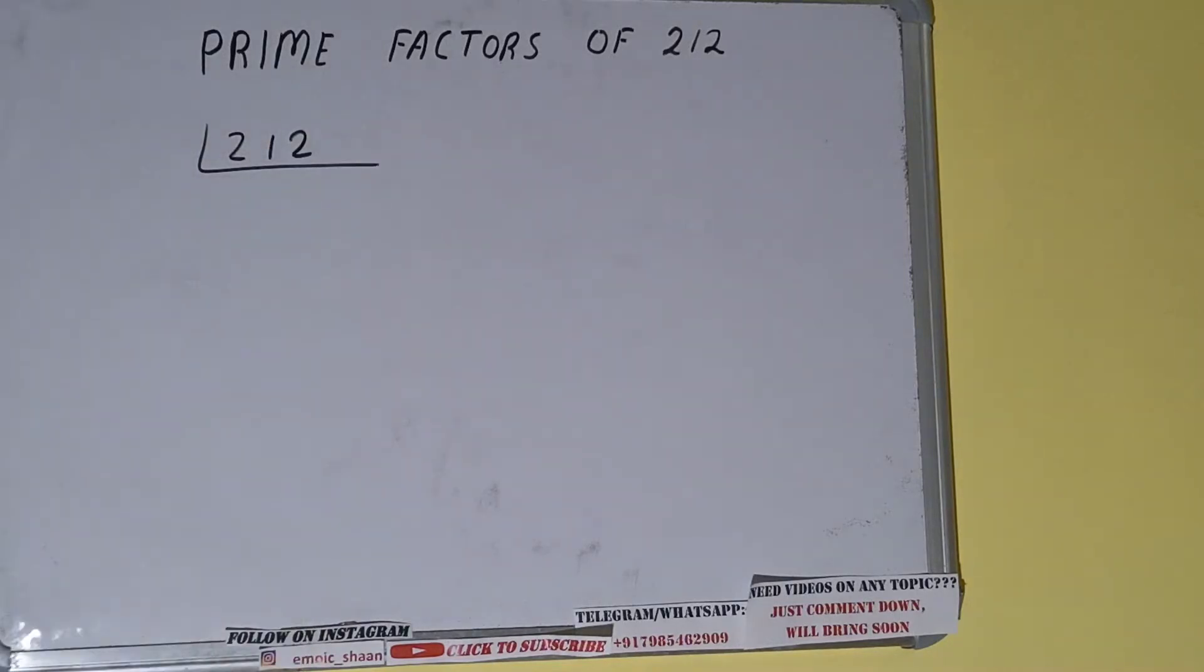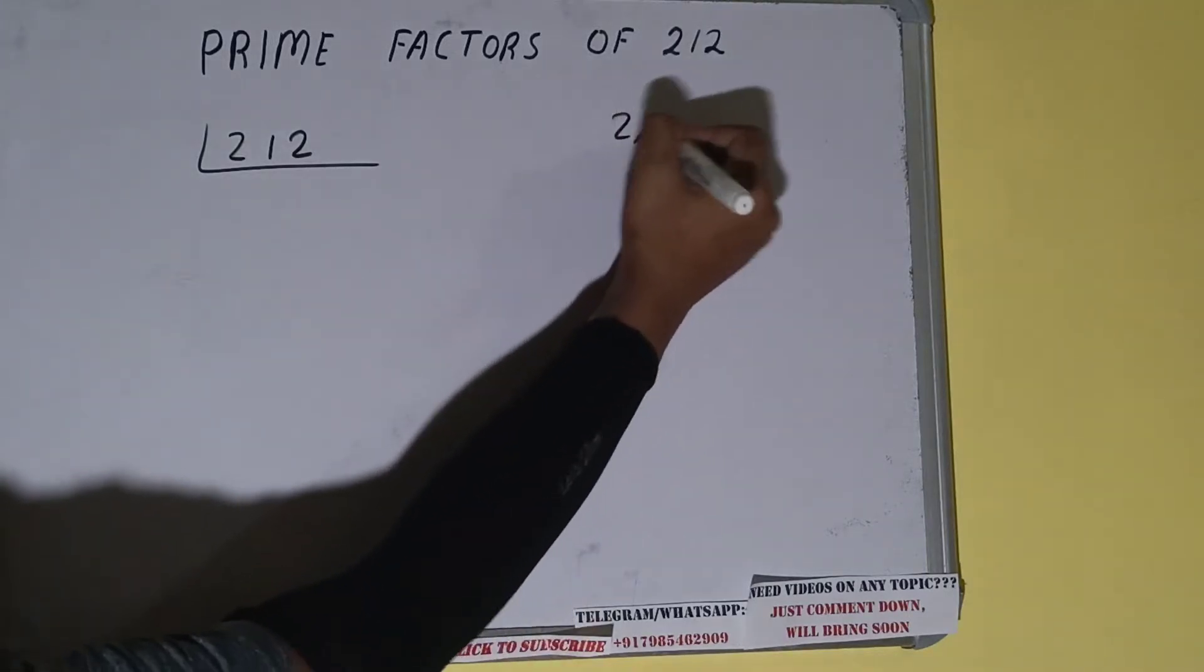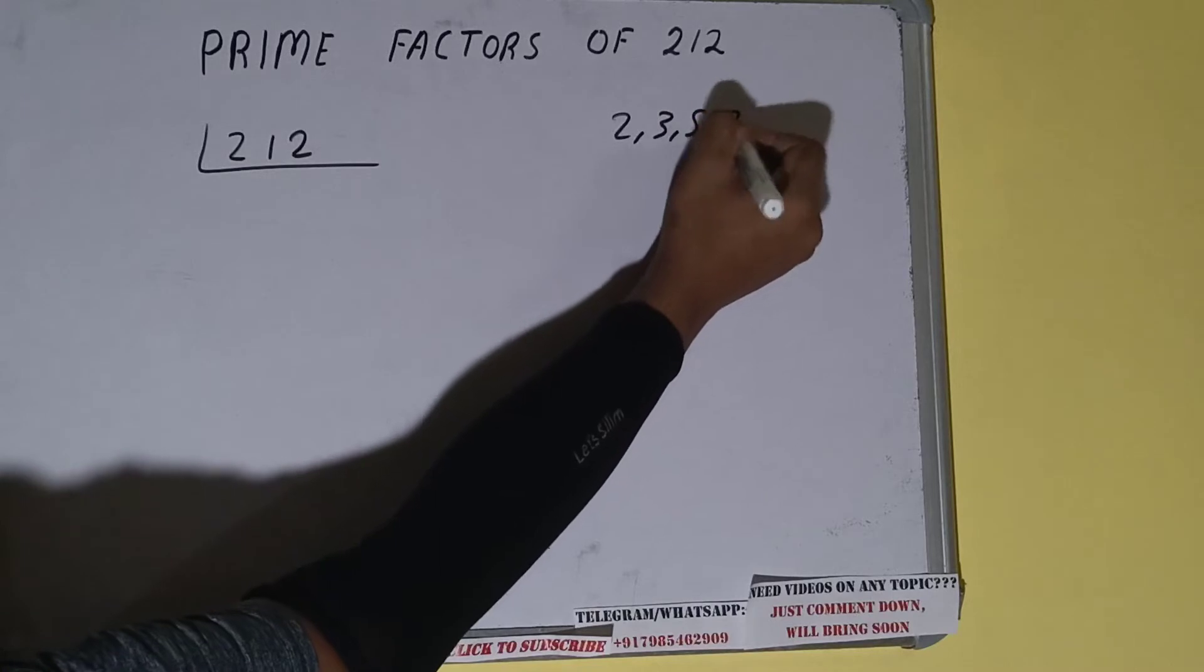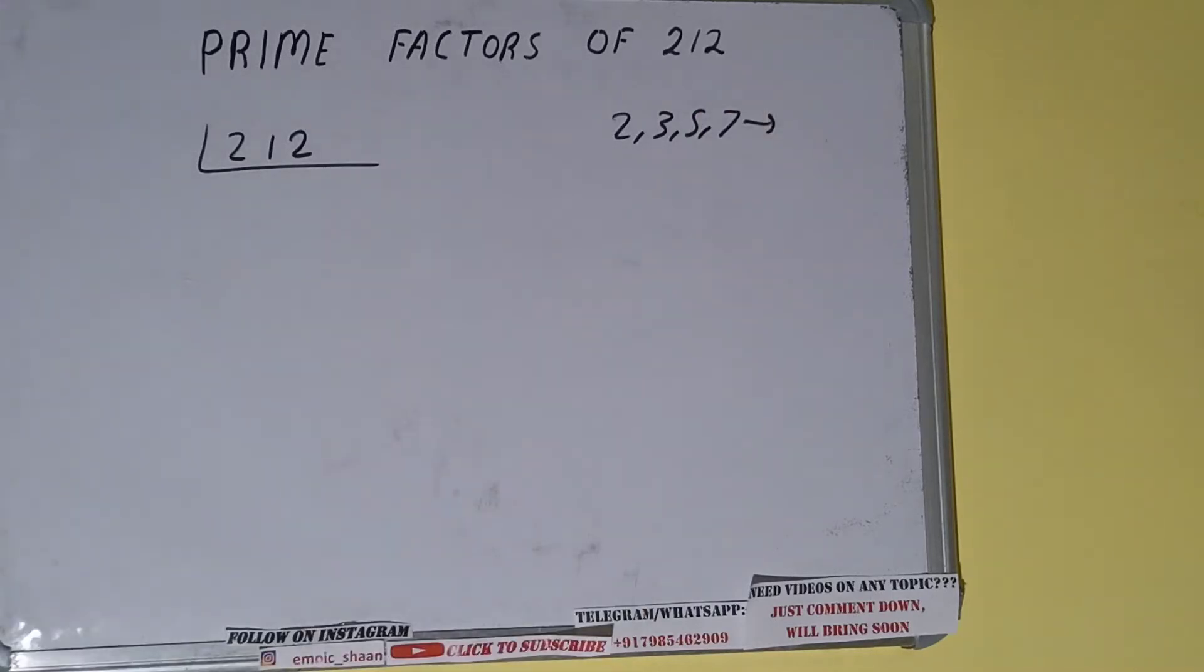The next thing we need to do is we need to know about what are prime numbers. So prime numbers are numbers that are divisible by 1 and the number itself, like 2, 3, 5, 7, and so on.